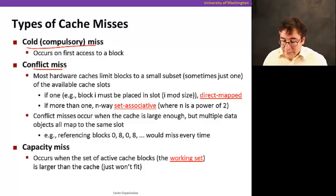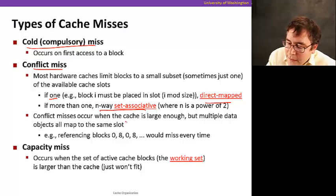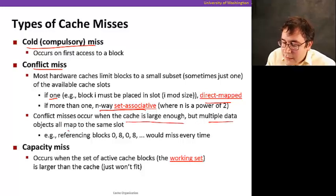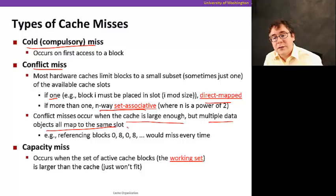For example, if it's just one of the direct mapped cache, you have more conflict misses. As you increase the set associativity, the number of ways in your cache, you're going to have lower conflict miss, because there will be fewer cases where data will kick other useful data out. Conflict misses happen when cache is large enough, but multiple data objects map to the same slot.